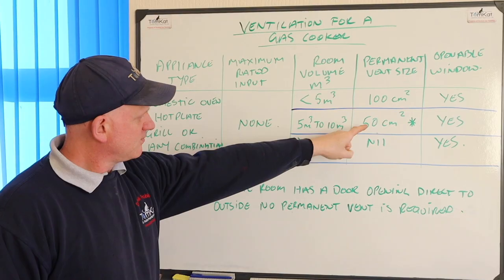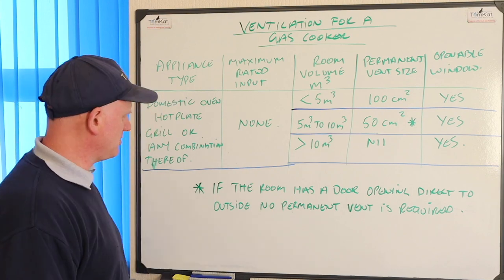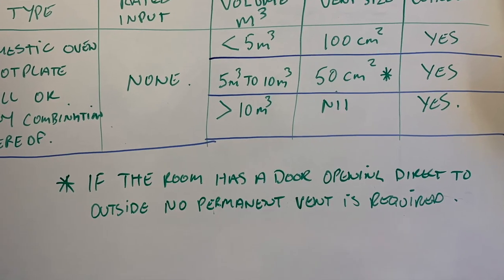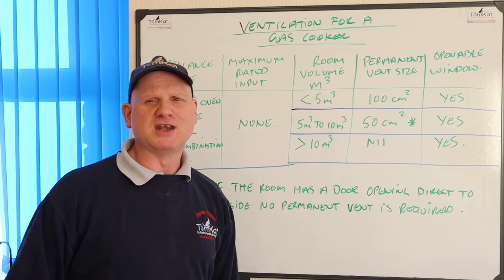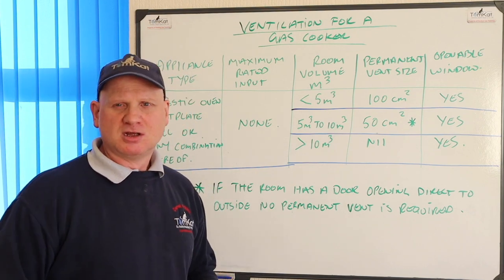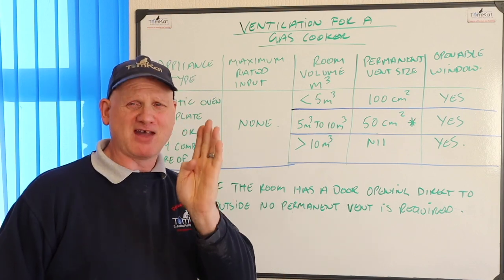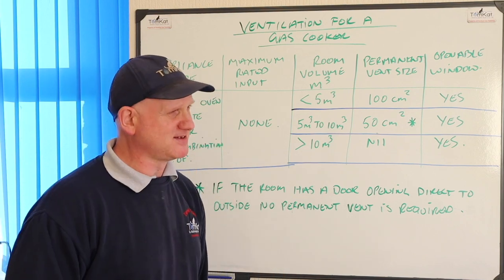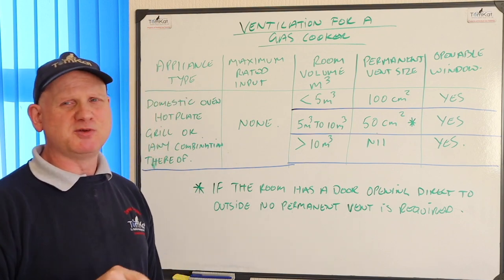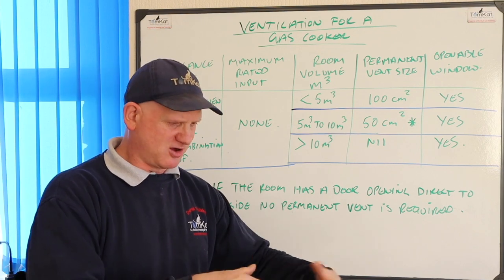If the room volume is between five and ten metres cubed and the room has a door opening directly to outside, no permanent vent is required, but the openable window still is — or any kind of extraction that complies to the building rates. If you have a bedsit, it has to be over 20 metres cubed before you can have a cooker in it; other than that you can only have a single ring or hot plate.